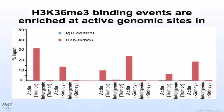This is ChIP PCR from patient tumors. The y-axis shows percent input; the x-axis shows various genetic loci. Using IgG as a nonspecific negative control and an antibody specific for histone 3-lysine 36 trimethylation — at the actin locus, predicted to be expressed in both tumors and uninvolved kidney, we see enrichment of H3K36me3 signal compared to IgG. An intergenic region on chromosome 12 with no known genes serves as a chromatin-closed negative control showing no signal from either IgG or H3K36me3. This is consistent across three tumors examined in-house.